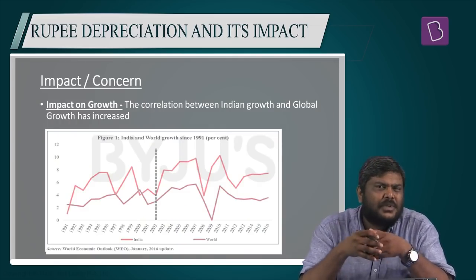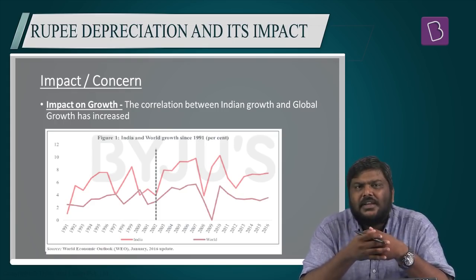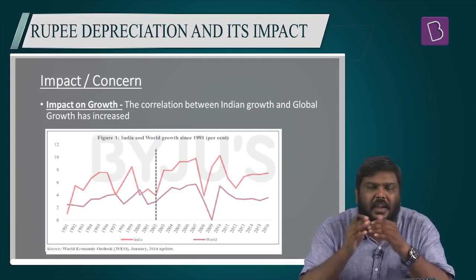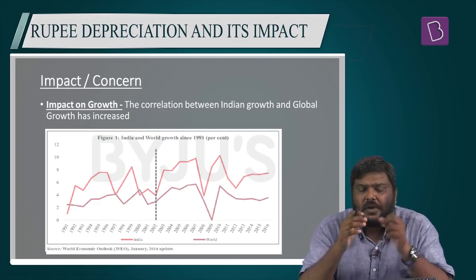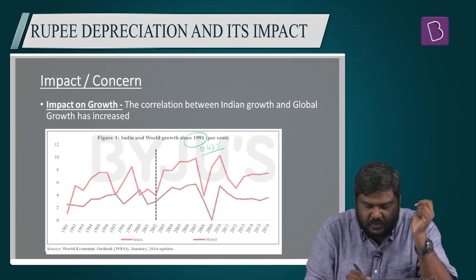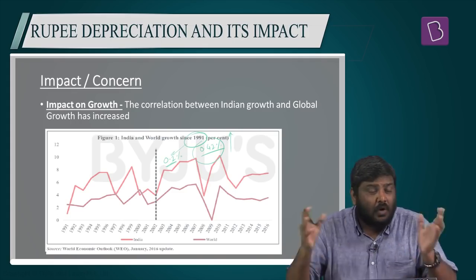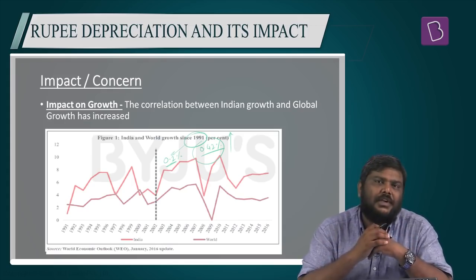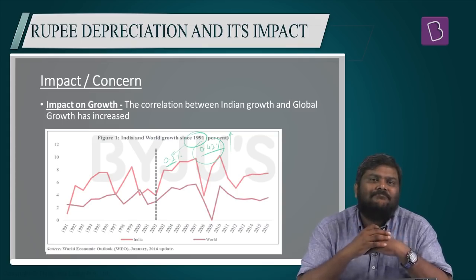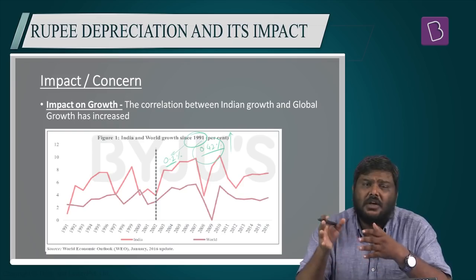Will this rupee depreciation affect India's growth prospects? Experts say there is a strong correlation between global growth and Indian growth — the correlation between Indian economic growth and global economic growth rate has been around 0.42. In simple terms, if the global economy increases by 1%, Indian economy will also increase by around 0.4%, and if the global economy is hit by 1%, Indian economy will decline by 0.4%. Since the global trade war will affect global trade growth, this will in turn affect the depreciation value and have a limiting effect on India's growth prospects.